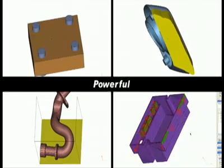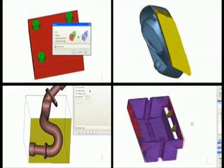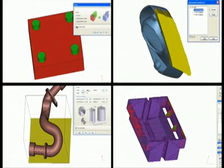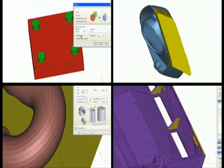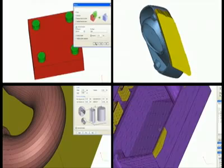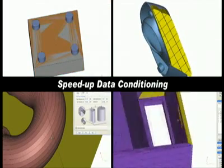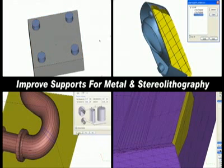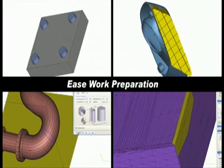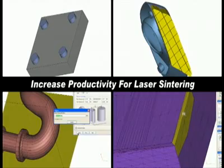Magix is a powerful, smart and user-friendly software that enables you to quickly and accurately import, inspect, repair and manipulate data to be physically produced on an additive manufacturing machine. The latest release, Magix 15, has some really exciting new features that will speed up data conditioning, improve supports for metal and stereolithography, ease work preparation, increase productivity for laser sintering and much more. Get ready to work faster and smarter with Magix 15.